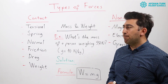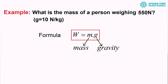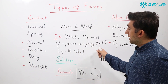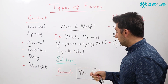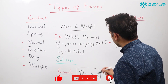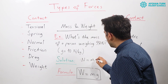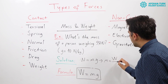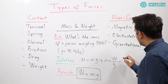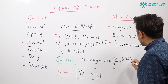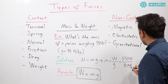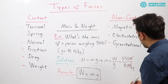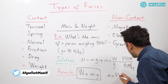Let's solve an example together about mass and weight. First, we need to know the formula: weight equals mass times gravity. The example asks: what is the mass of a person weighing 550 Newton, given gravity as 10 Newton per kilogram? We are trying to find mass. Rearranging the formula, mass equals weight divided by gravity — that is 550 Newton divided by 10 Newton per kilogram. The Newtons cancel out, giving us a mass of 55 kilograms.